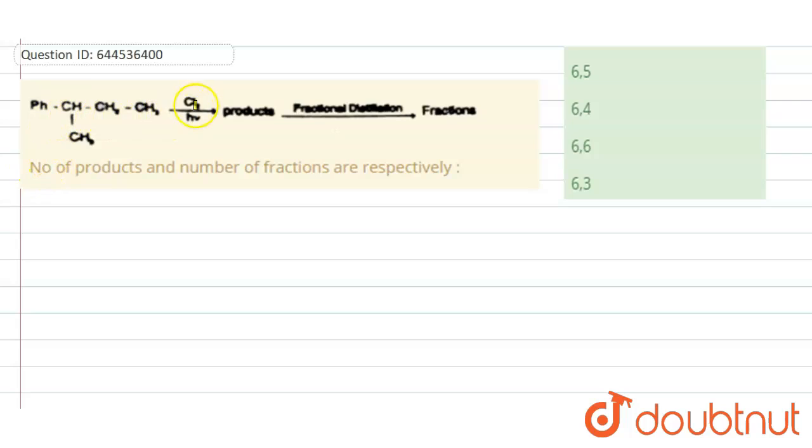This reaction is given and it is first undergoing chlorination and the products are forming. Further, these products undergo fractional distillation and some fractions of products are forming. Number of products and number of fractions respectively are - so we need to find out the total number of products and total number of fractions obtained after fractional distillation.